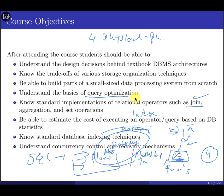You'll be able to estimate the cost of query operators based on database statistics. You'll understand which plans the DBMS applies internally. Hopefully this semester we'll cover concurrency control and recovery mechanisms — how the DBMS handles multiple users accessing data simultaneously, and how it recovers from errors. For example, if a transaction over a bank transfer from account A to B fails midway, how does the system recover?